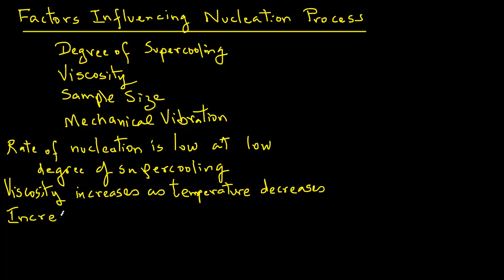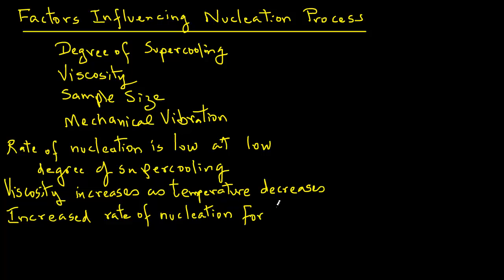Sample size affects the rate of nucleation. At a lower degree of supercooling, heterogeneous nucleation occurs more rapidly for a large sample size. The increased rate of nucleation is due to more nucleating agents that will be present for a larger sample.